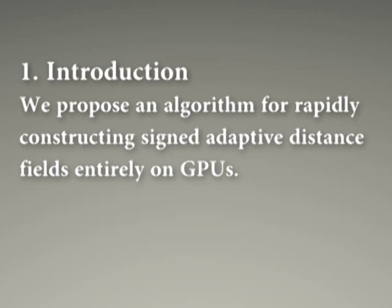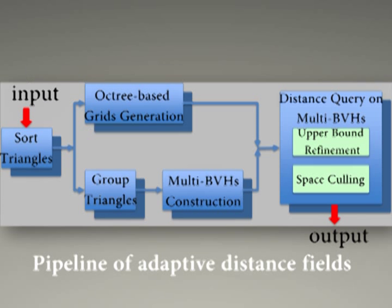We propose an algorithm for rapidly constructing signed adaptive distance fields entirely on GPUs. Here, we give the pipeline of our algorithm.